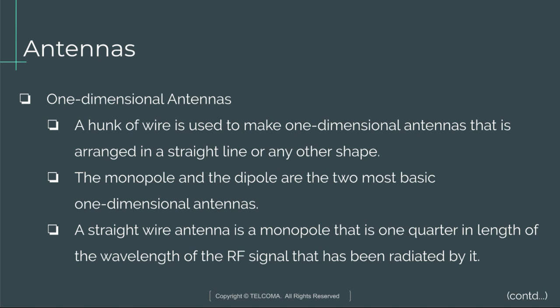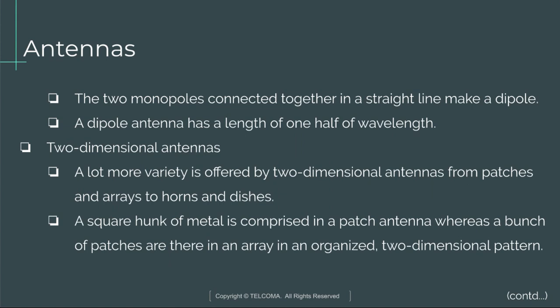Next are one-dimensional antennas. A piece of wire arranged in a straight line or any other shape is used to make one-dimensional antennas. The monopole and the dipole are the two most basic types. A monopole is a straight wire antenna that is one-quarter wavelength of the RF signal it radiates. Two monopoles connected together in a straight line make a dipole, which has a length of one-half wavelength.